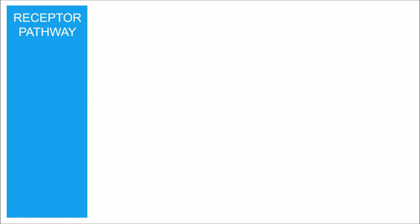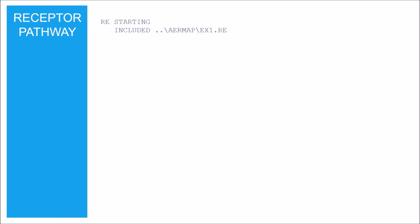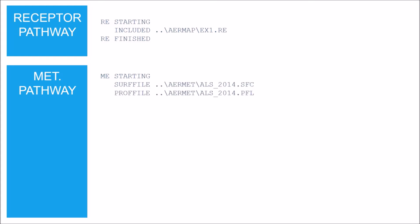The next pathway is the receptor pathway. The first line starts with the keyword STARTING. The INCLUDED keyword is used to include the file with the receptor information generated with AirMap; the receptor pathway must end with the FINISHED keyword. The next pathway is the meteorology pathway. The first line starts with the keyword STARTING. The SURFFILE and PROFFILE keywords are used to include the surface and profile meteorological data files that were generated with AirMet.